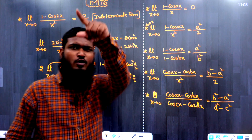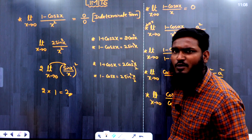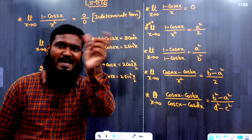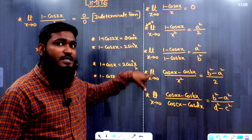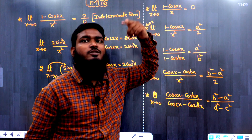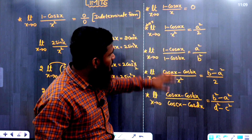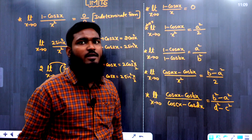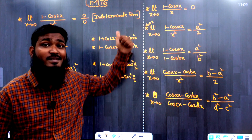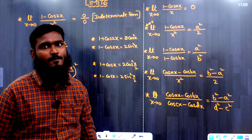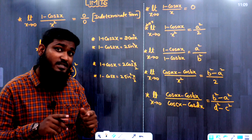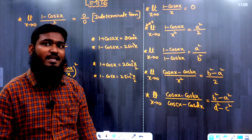In this video we discussed one more shortcut related to limits: 1 − cosx/x = 0, and 1 − cosx/x² = a²/2. The remaining formulas are derived from these. In the next video, we will discuss one more shortcut on limits. If you enjoyed this video, please share it with your friends in your WhatsApp group. Thank you very much.